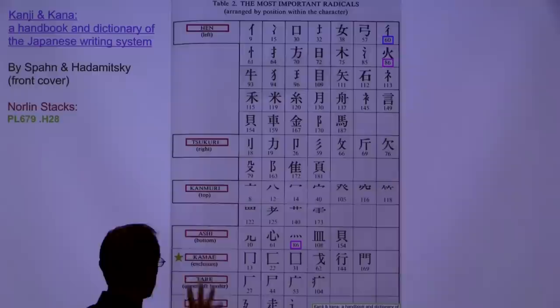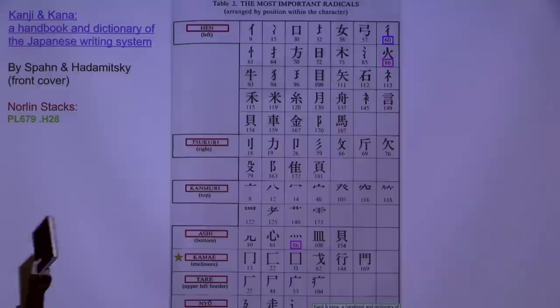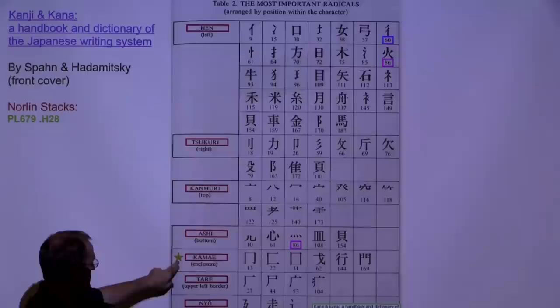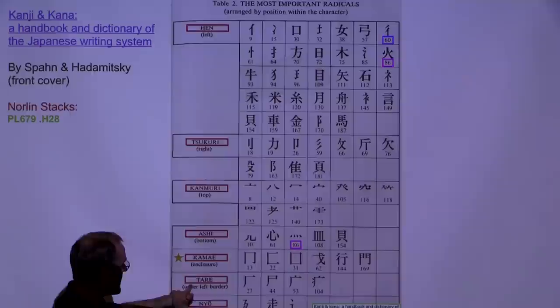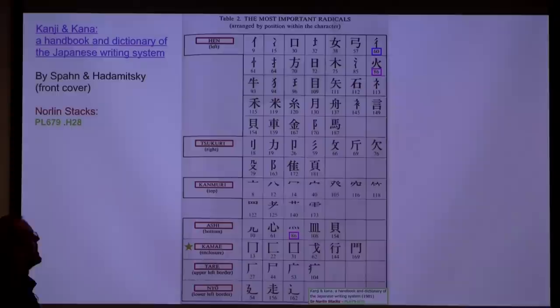Those radical positions have special names. If the radical is on the left side of the character, that position is called 'hen.' If it's on the right, it's 'tsukuri.' The top is 'kanmuri,' which literally means crown. 'Ashi' means foot — but not the foot character you've learned; there's a different one. 'Kamae' is a general enclosure radical. 'Tare' is when the enclosure is specifically in the top and the left. And 'nyo' is specifically when it's on the left and the bottom.